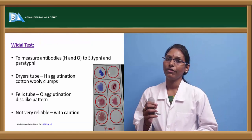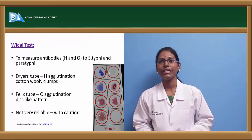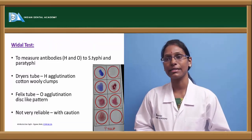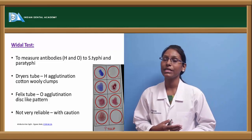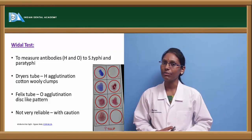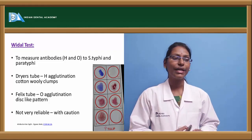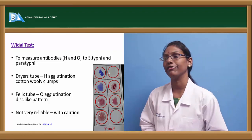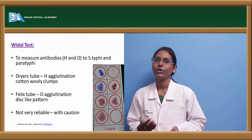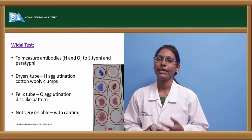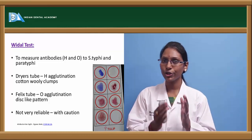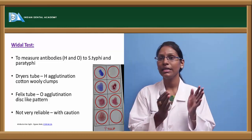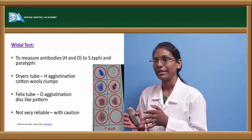Another very commonly used, routinely done investigation for identifying typhoid is the Widal test. This Widal test helps in measuring antibodies — antibody H and antibody O — for Salmonella typhi and paratyphi. The method uses two different tubes: the Dreyer's tube and the Felix tube.